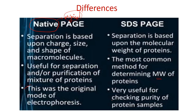SDS PAGE is very useful because it can help you check the purity of a protein sample. If your protein is a multimeric protein — a dimer, trimer — you need to see what the subunits are. The subunits are of different sizes and molecular masses. When you do SDS PAGE, you can separate the protein on the basis of molecular weight, so subunits of a protein containing many subunits can be separated very distinctly.